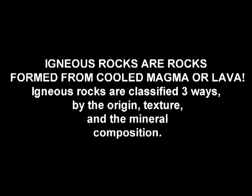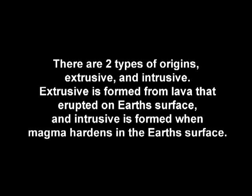Igneous rocks are classified three ways: by the origin, texture, and mineral composition. There are two types of origins: extrusive and intrusive. Extrusive is formed from lava that erupted on Earth's surface, and intrusive is formed from magma that hardens beneath the surface.